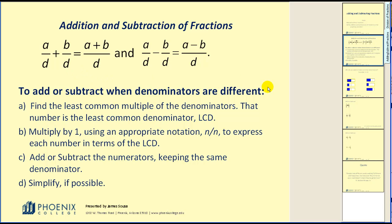To add or subtract when denominators are different we will need to find a common denominator and that is we need to find the least common multiple of the denominators. That number will be the least common denominator or LCD. Next we will multiply by one using the appropriate notation n over n to express each number in terms of the LCD. Then we will add or subtract the numerators keeping the denominator the same. And then of course we will simplify if possible.